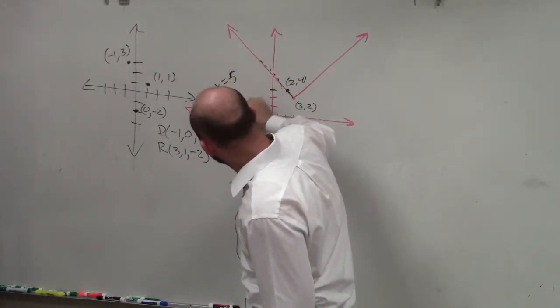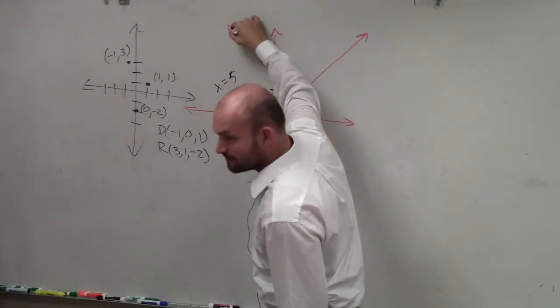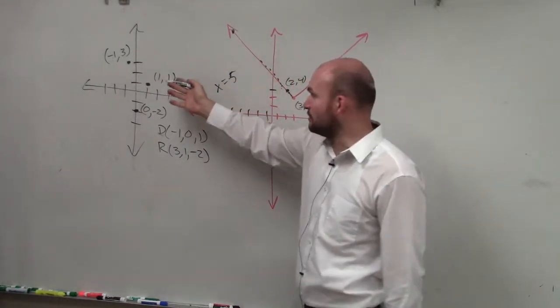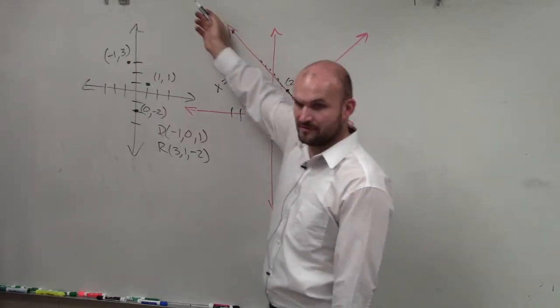1, 2, 3, 4, 5. Is that a point on the graph? Yes. Is there any reason to believe for any x values I keep on going to the left is not going to be a part of this graph?